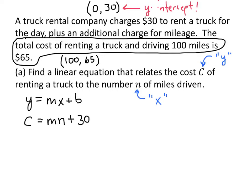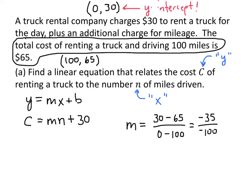The only thing we don't know in this equation is the slope M, so let's figure that out. The slope is the change in Y over the change in X — the difference in Y values divided by the difference in X values. On the top we have 30 minus 65, and on the bottom, keeping our points in the same order, 0 minus 100. That gives us negative 35 on top and negative 100 on the bottom.